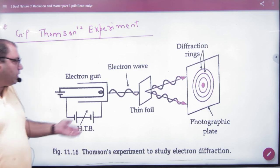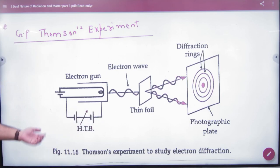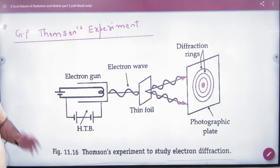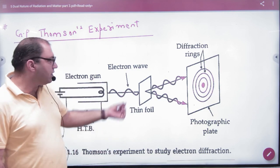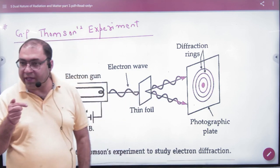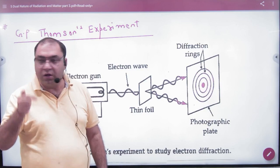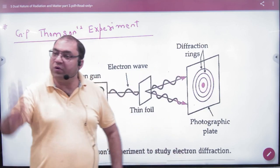In G.P. Thomson's experiment, it showed that it had an electron gun, electron wave, electron beam. And what did it do with the wave? It had a single slit in the setup, and it had diffraction on the screen.